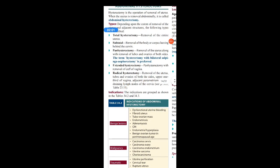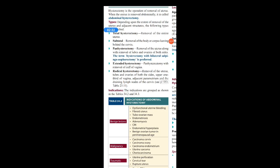The next type is extended hysterectomy. When pan hysterectomy is performed along with the removal of the cuff of the vagina, it is called extended hysterectomy, because you are extending the surgery up to the cuff of the vagina. Along with the tubes, uterus, and ovaries, the upper cuff of the vagina is also removed.